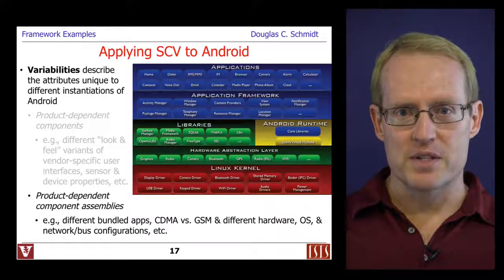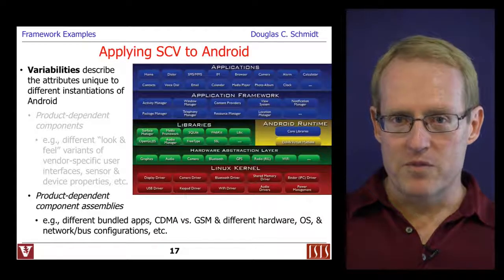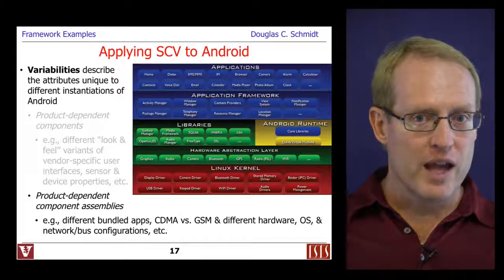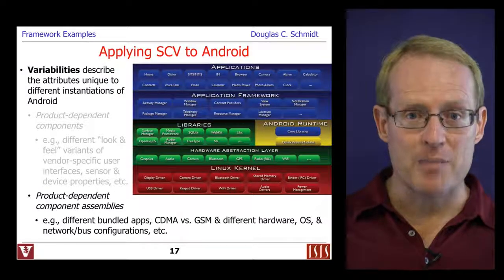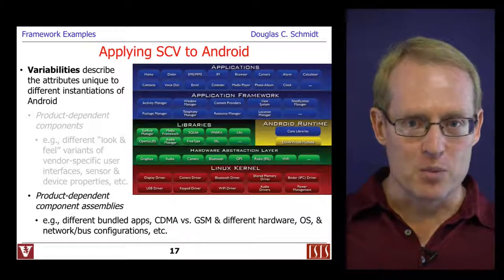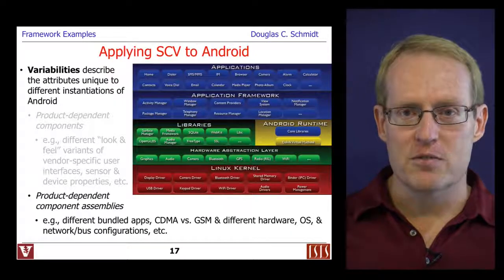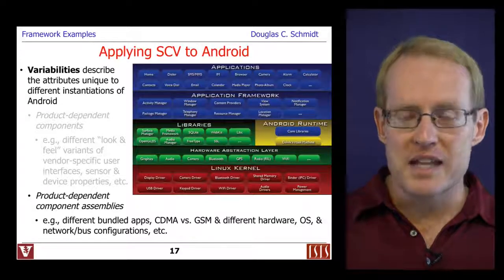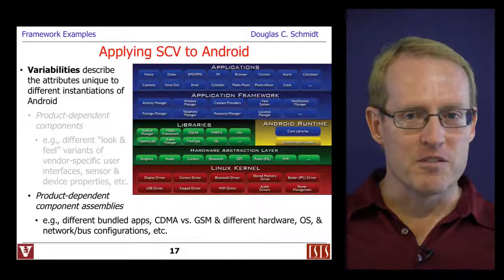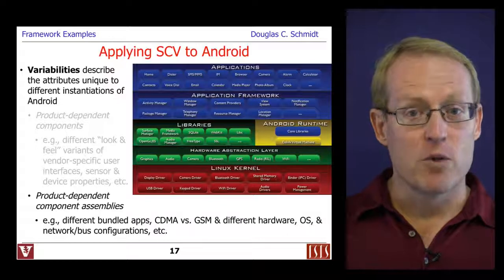There are also a number of different ways of assembling components that are product-dependent. For example, different vendors may bundle different subsets of applications — some vendors may have their own maps or email applications, while others may prefer to use the open source versions bundled with the Android open source release. And of course, there are also different assemblies for different types of telephony protocols, CDMA versus GSM, and various kinds of hardware, software, and operating system configurations based on footprint or performance form factors.